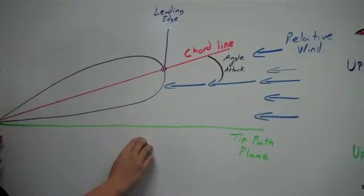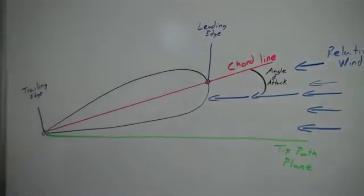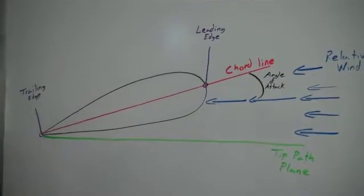Down here, we have the tip path plane. It's the imaginary line that the tip would draw as it goes around in its planar rotation.